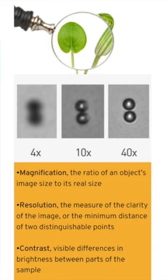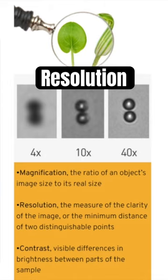Resolution is the measure of the clarity of the image or the minimum distance of two distinguishable points. For example, if I place two dots near each other, you can probably distinguish them clearly. They have a high resolution. But if I make the dots smaller and closer together, that resolution will decrease as it becomes less clear.